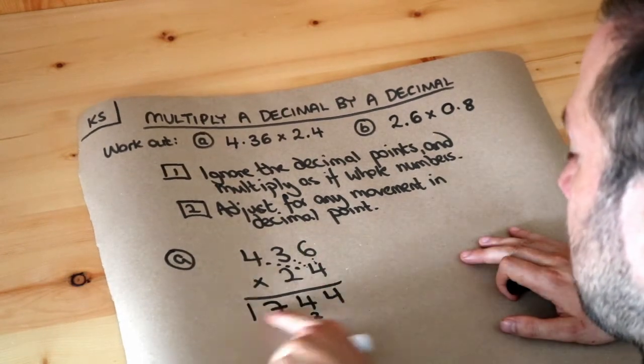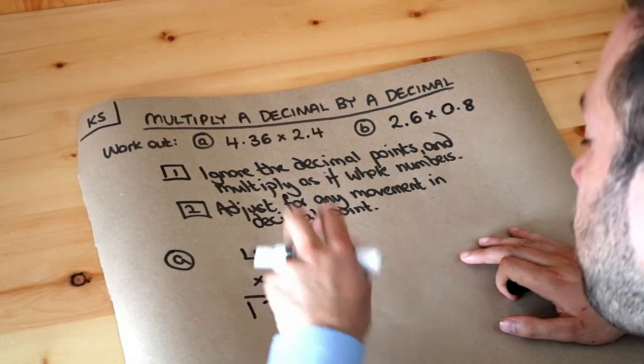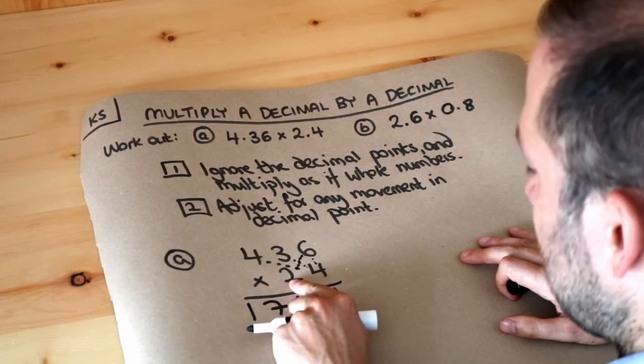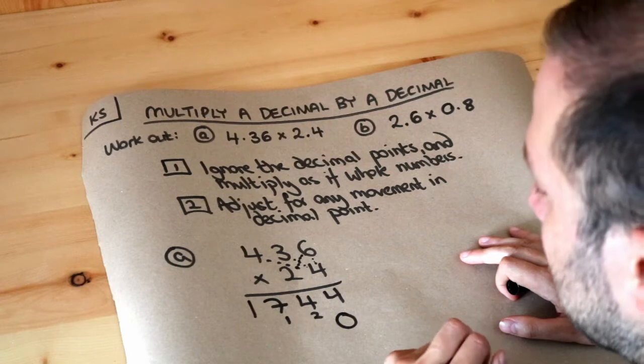So 436 times the 4 is this, and then, do you remember, we're going to times each of the 4, 3, and 6 by the 2 now. But actually, because the 2 is the tens digit, we're timesing by 20, so I'm going to put a 0 at the end so now we can just times by 2.